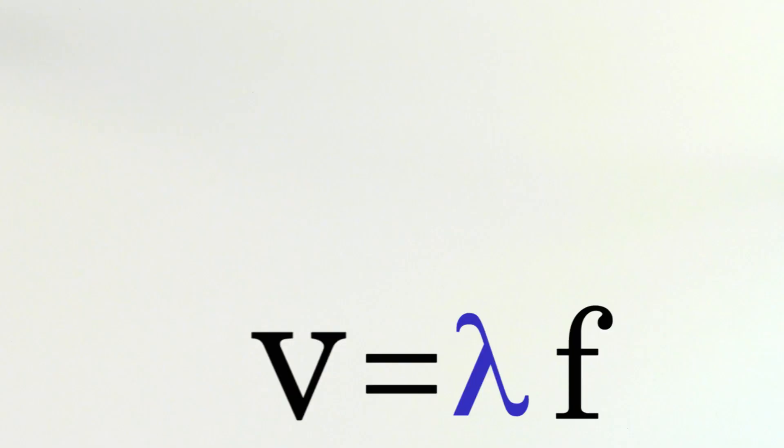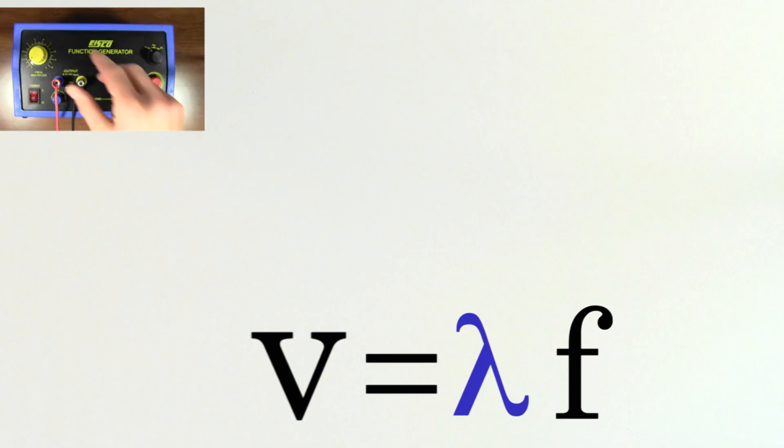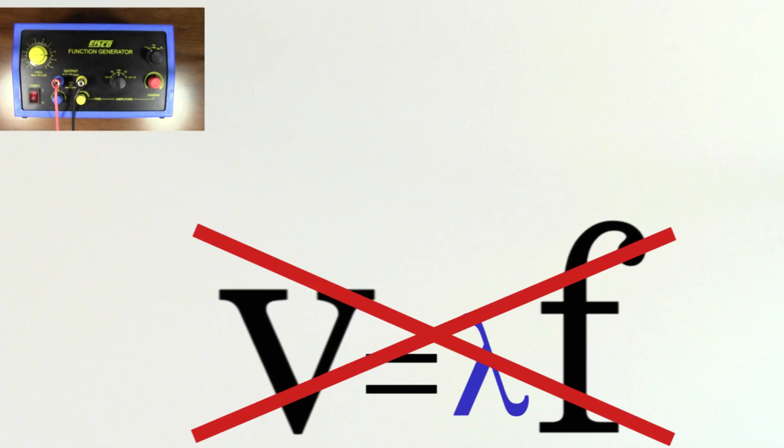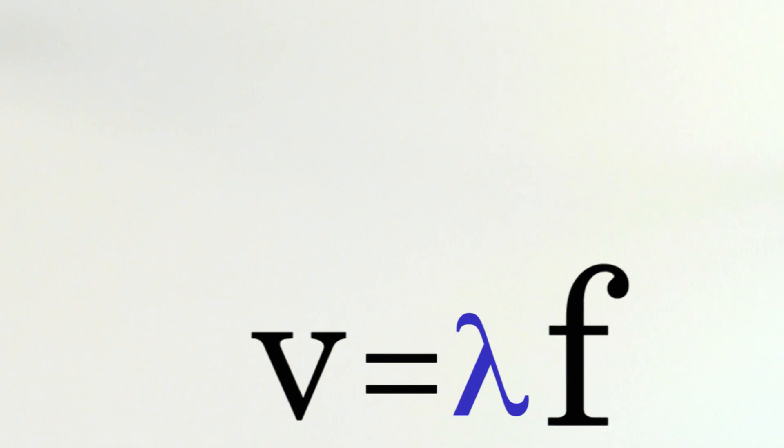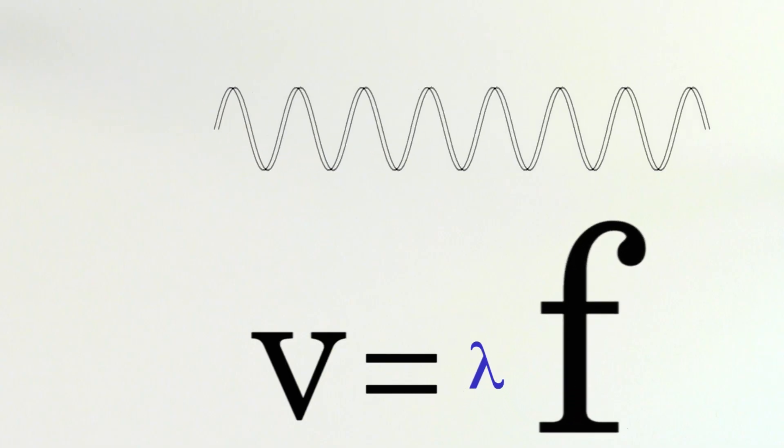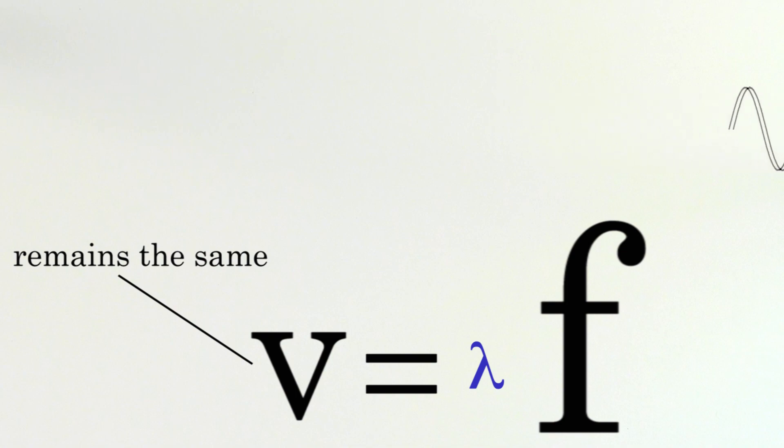Be careful! When looking at this equation, you might think that if you adjust the setting on your speaker and increase the frequency, you'd also be increasing the speed of the sound wave. But that's not what happens. If you increase the frequency, the wavelength will decrease by that same factor, and the speed of the sound wave will remain the same.